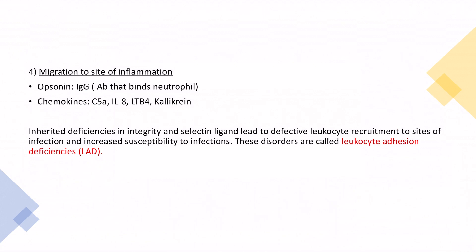Migration to the site of inflammation involves IgG opsonins that bind neutrophils, as well as chemokines. Very high yield for step exams: which chemokines are responsible for neutrophil chemoattraction? The answers are C5a, interleukin-8, leukotriene B4, and kallikrein — put these in your hippocampus. Inherited deficiencies in integrins and selectin ligands lead to defective leukocyte recruitment to sites of infection and increased susceptibility to infections — disorders called leukocyte adhesion deficiencies.